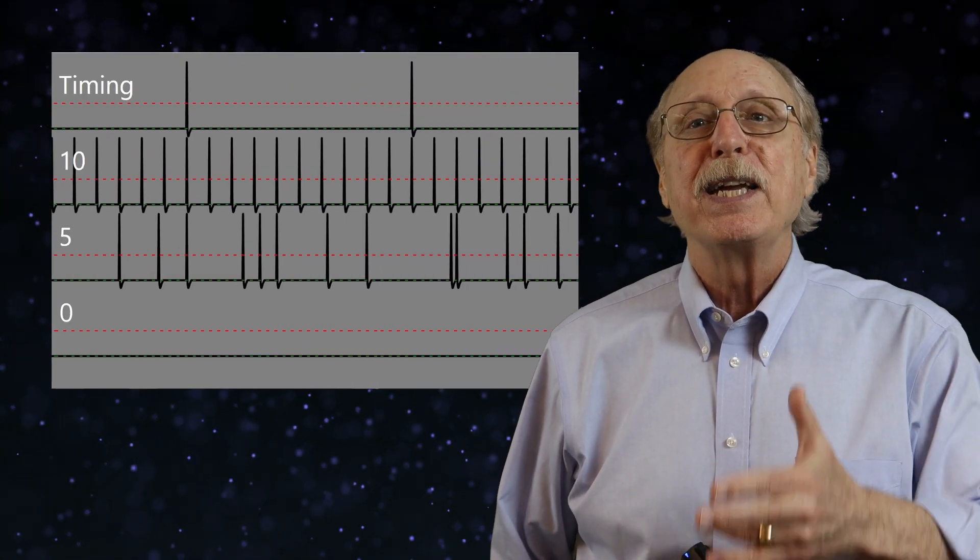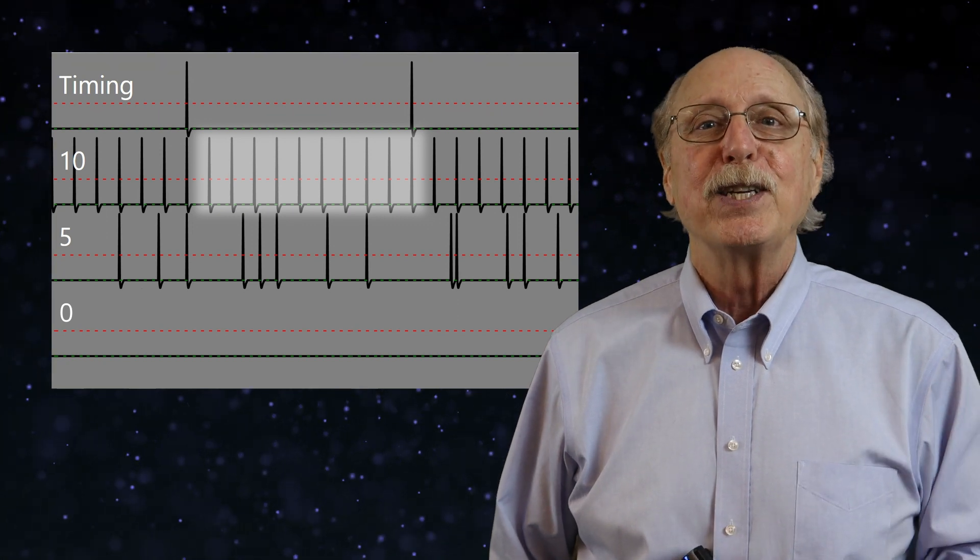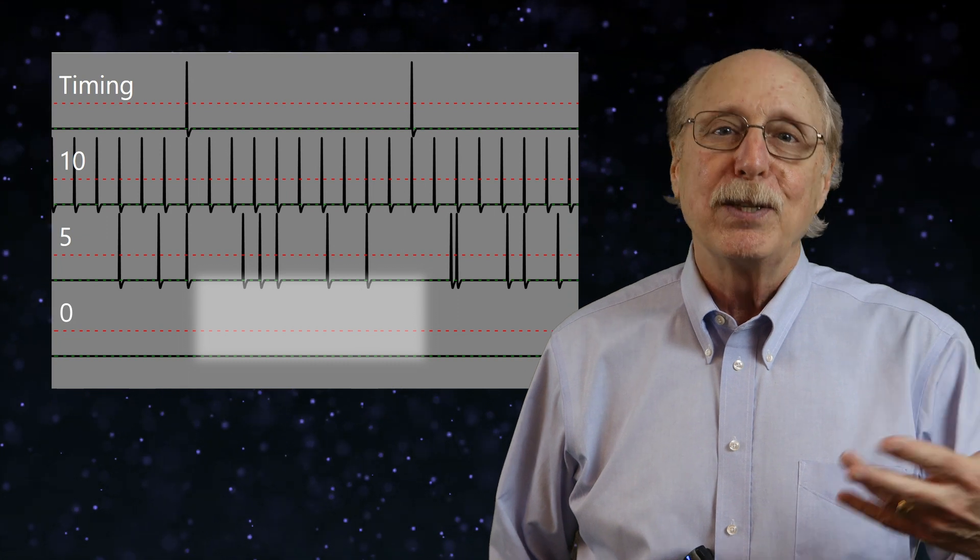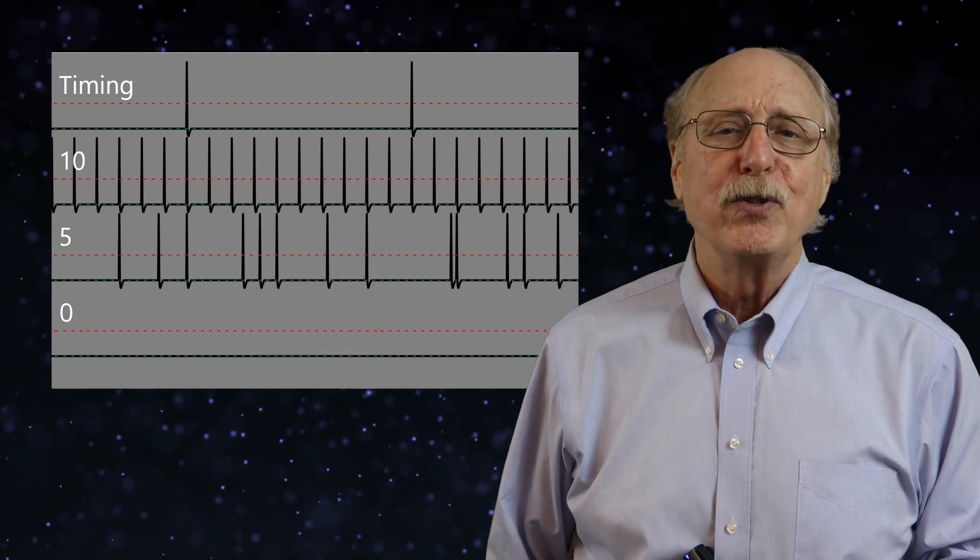If 10 spikes occur in that time period, we could say that represented 10. And if no spikes occur, that could represent 0. But there are some issues with this approach.